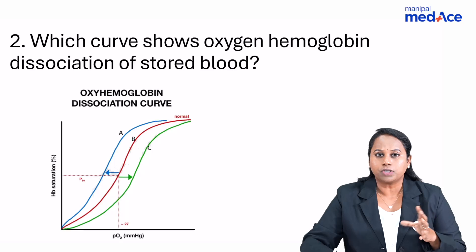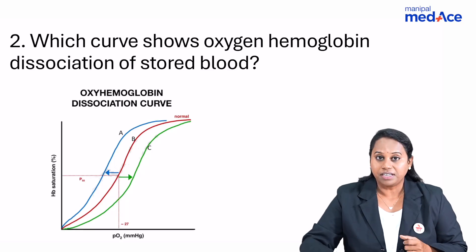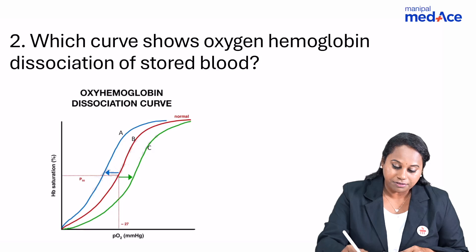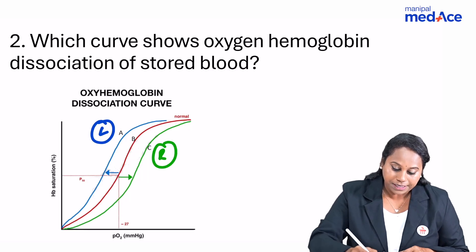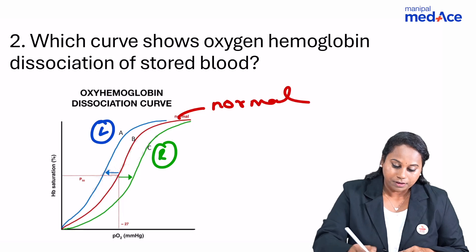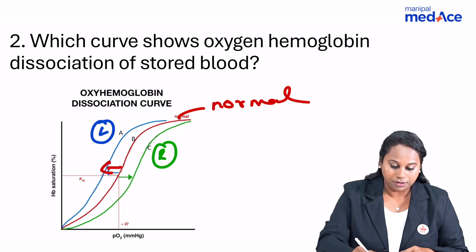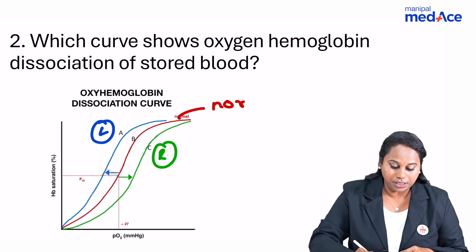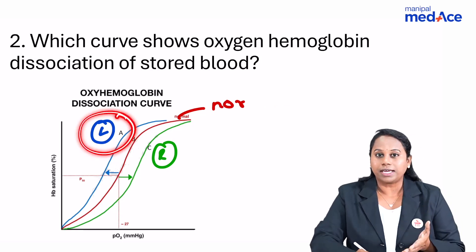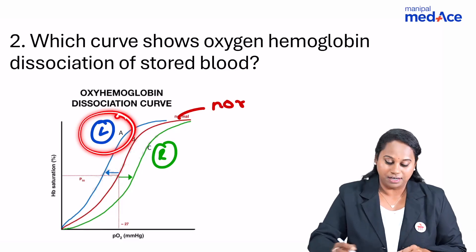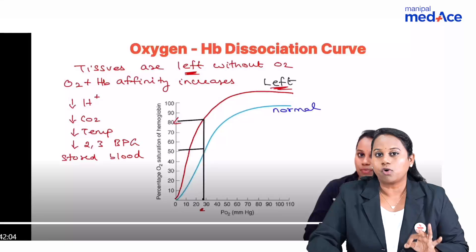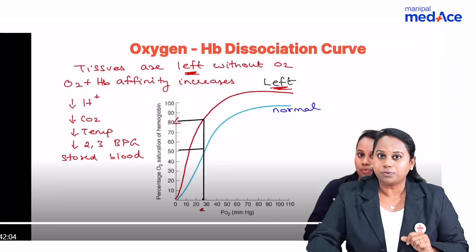In the question, four curves were given and you had to identify a, b, c, or d. If curve A is the left shift, curve C is the right shift, and curve B is the normal curve, then the answer would be the left shift of the curve. This is a very important topic — oxygen-hemoglobin curve questions are asked repeatedly.